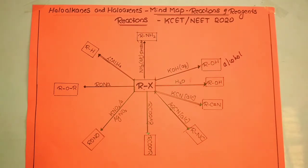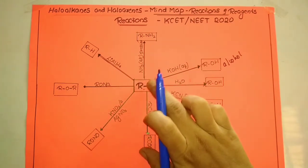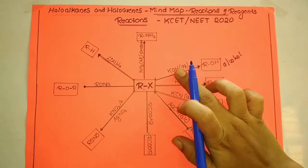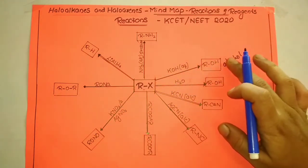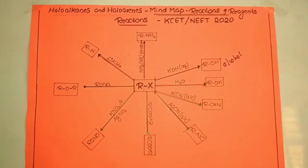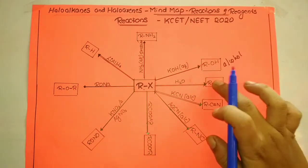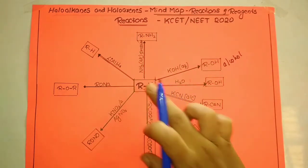In any competitive exam question, if alkyl halide is given with the reagent aqueous potash, you can predict the answer is alcohol. Similarly, if water is given, the product is also alcohol. These two you have to remember.